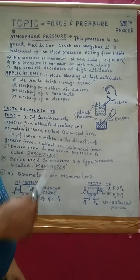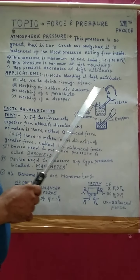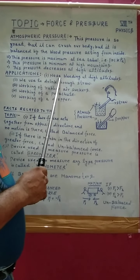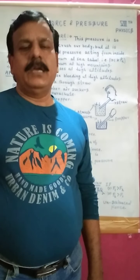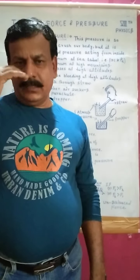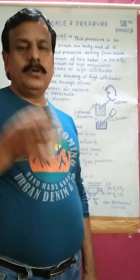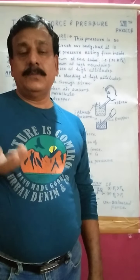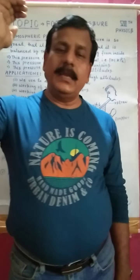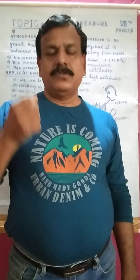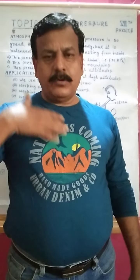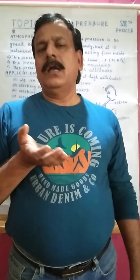Now some applications related to atmospheric pressure. Number one: nose bleeding at high altitudes. If you go up to high mountains, you find that your nose starts bleeding. It is due to atmospheric pressure — as you go to high altitudes, the atmospheric pressure decreases, so your internal body pressure increases and it forces nose bleeding.